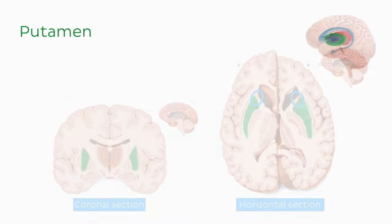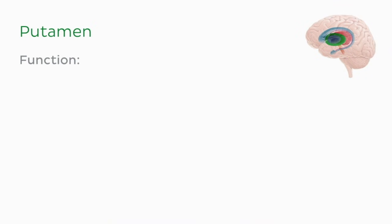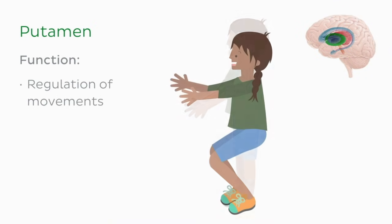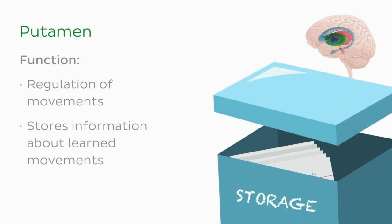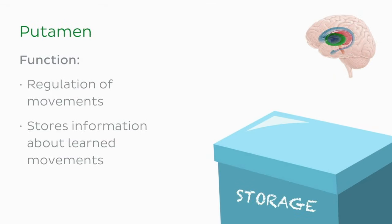The putamen is involved in regulation of movements and stores information about previously learned movements, which we'll learn more about later in the tutorial when we look at the pathways of the basal ganglia.